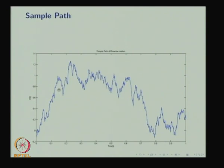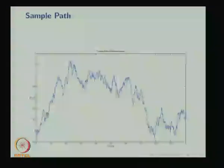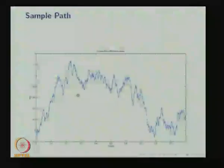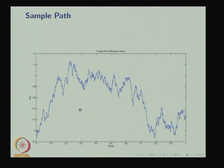The sample path of the Wiener process looks continuous with no jumps. By definition, W(t + s) − W(t) follows a normal distribution and can take positive and negative values. The sample path W(t) is continuous, and the random walk in the limit becomes the Brownian motion, which one can visualize in the sample path.